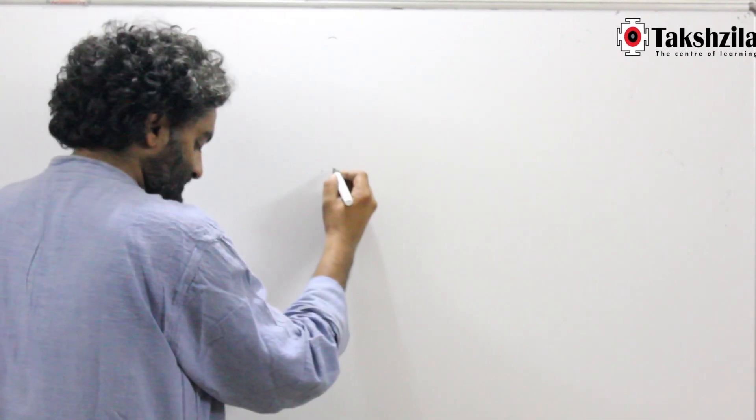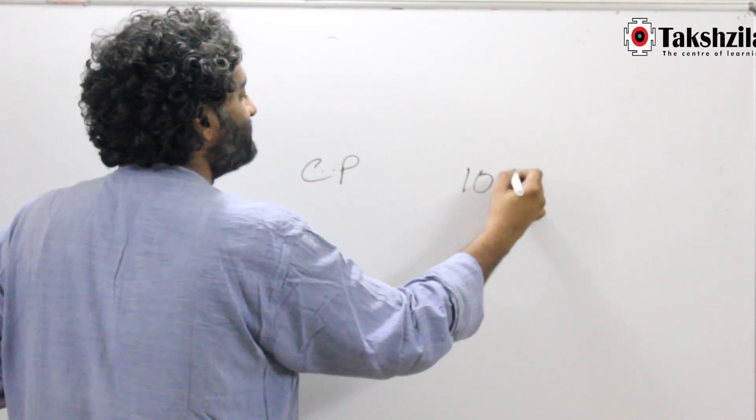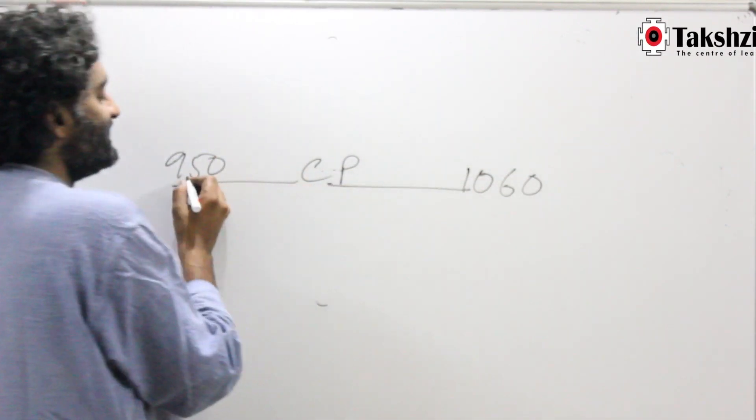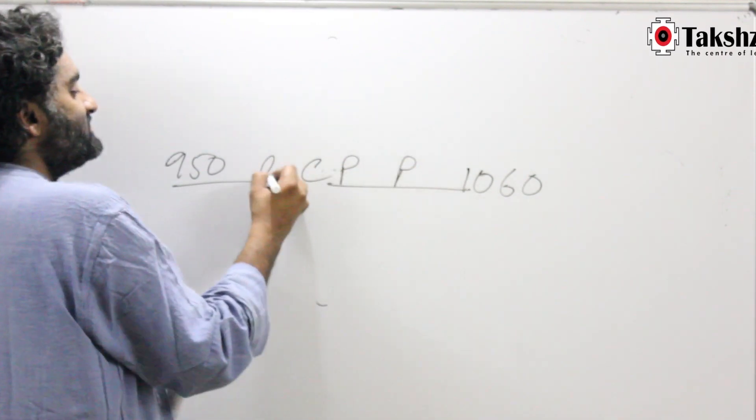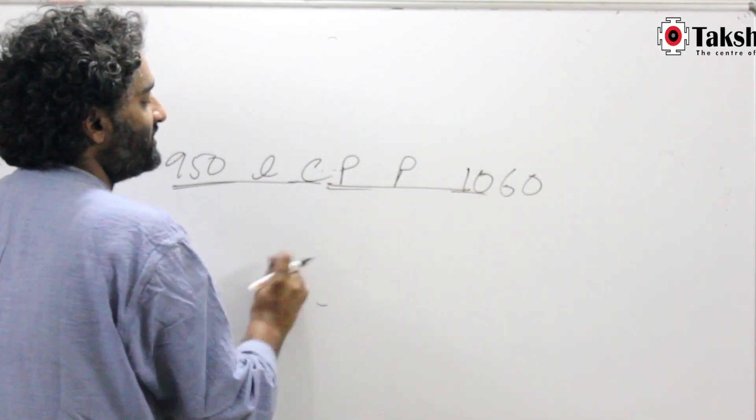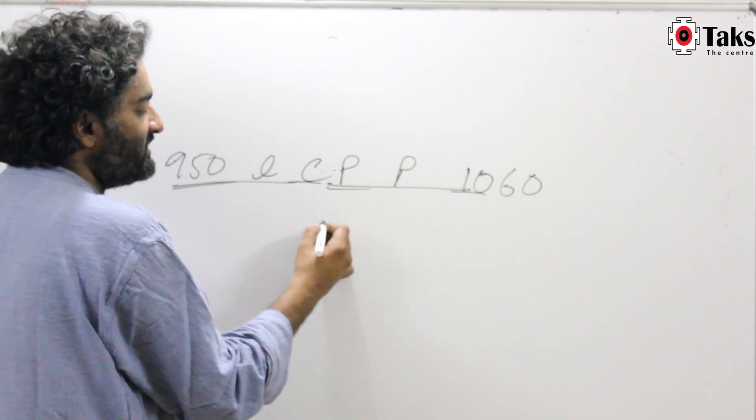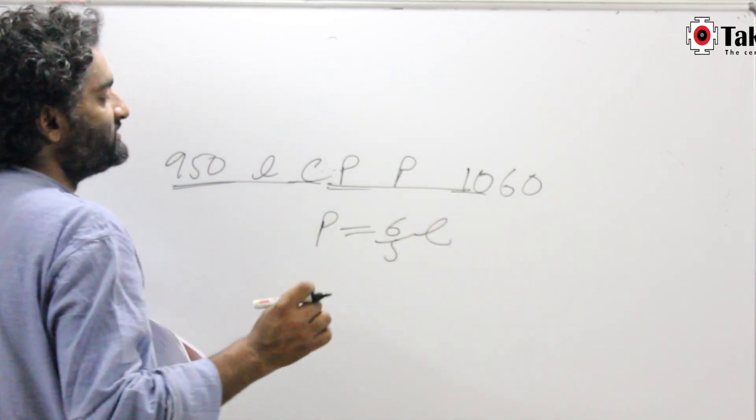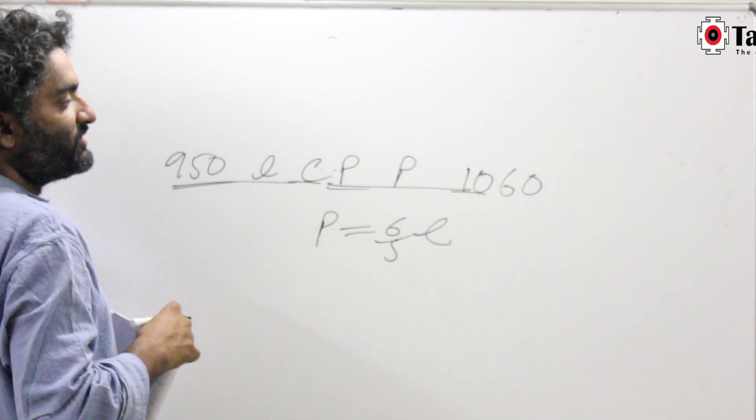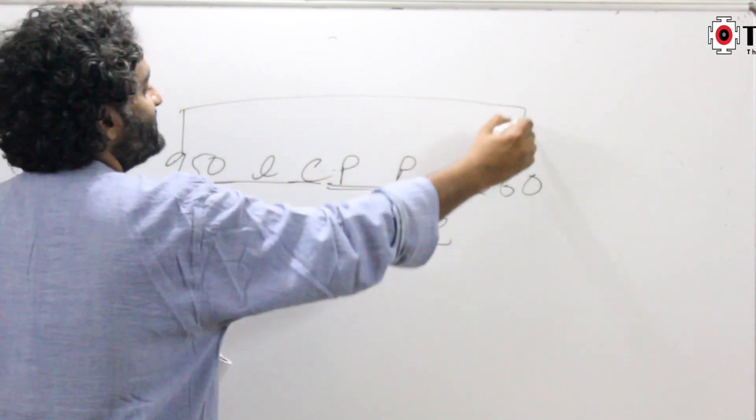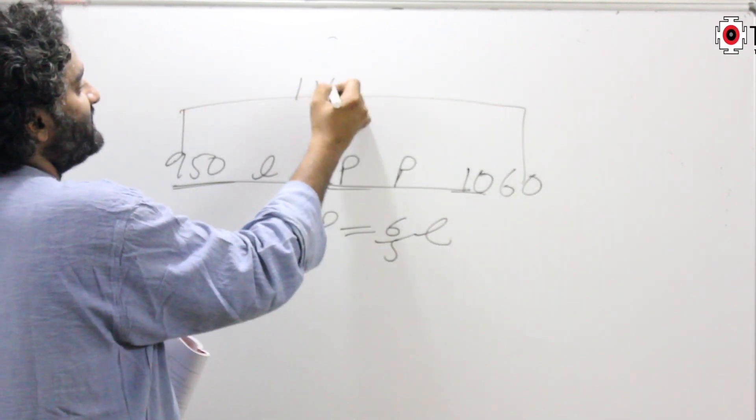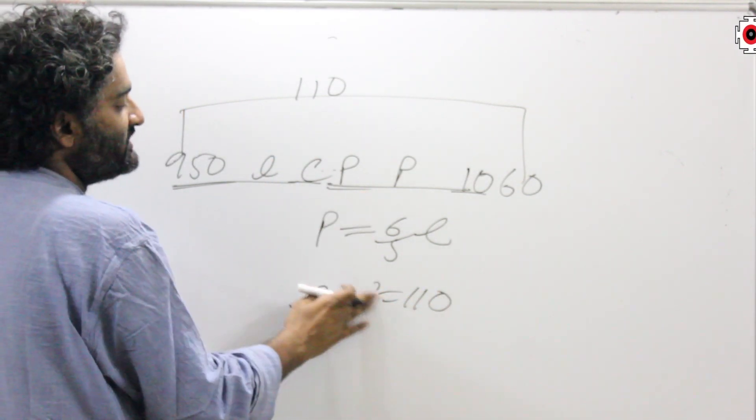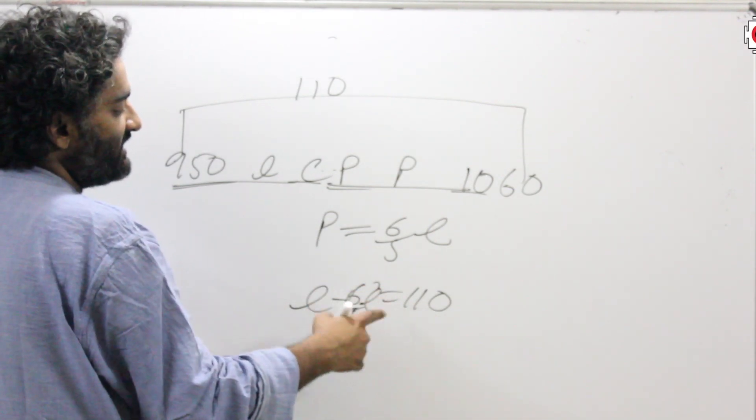So I know there is a CP, and there is a selling price of 1060, and there is a selling price of 950. This distance is the loss, this distance is the profit. What is given in the story? If you can translate it in simpler form: that profit is 20% more than the loss. I also know that the difference between these two points is 110. That means loss plus profit is 110, and I know profit is 6 by 5 times the loss. Once I work this out, I get 11 by 5 loss is equal to 110.